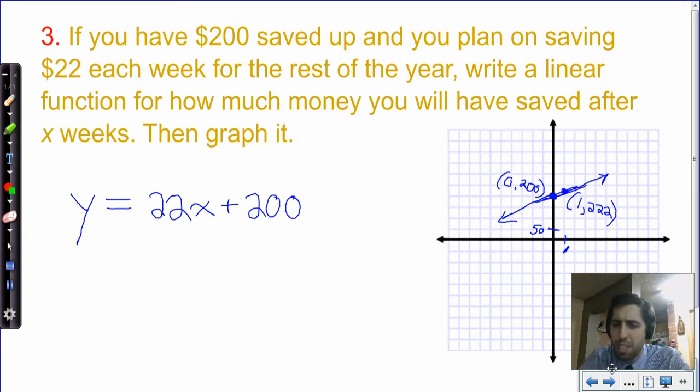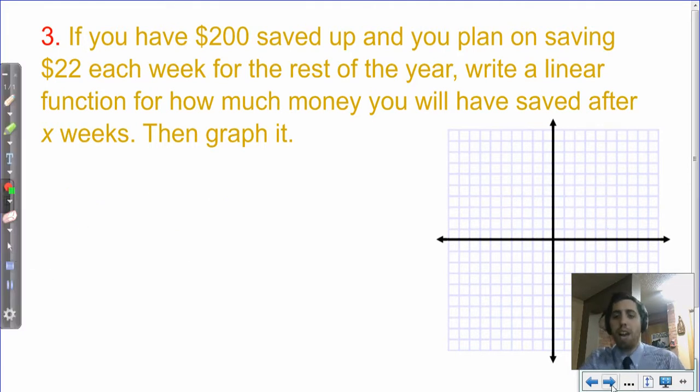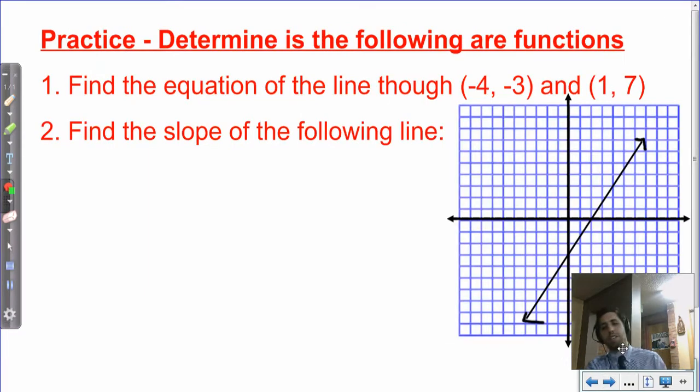For a challenge question, or just to check your understanding, make sure you know, what would negative 1 be? So if you saved $22 this past week, or just use the idea of slope. If you go 1 to the left, what happens with that slope? And so what would your point be? I'm going to leave you with some problems. The first one says, find the equation of the line through negative 4, negative 3, and 1, 7.